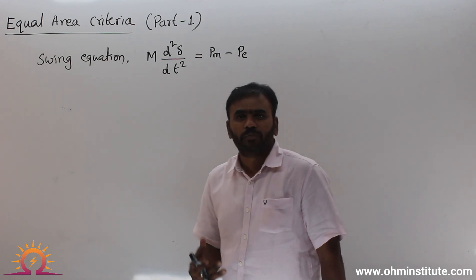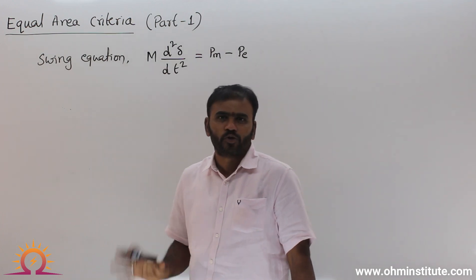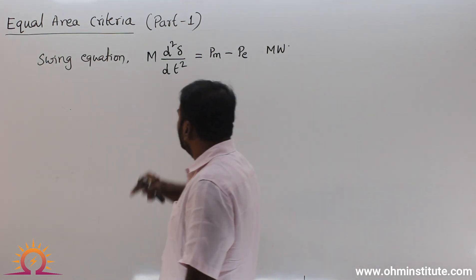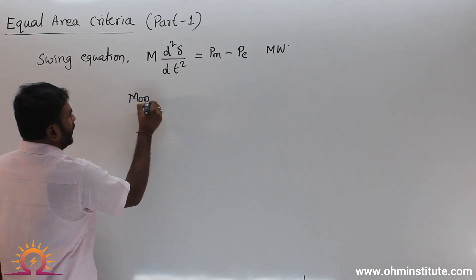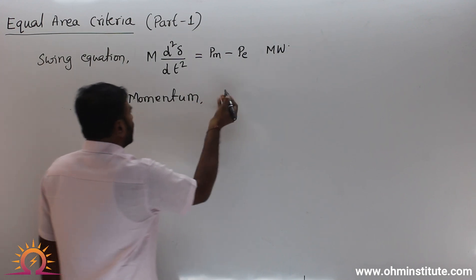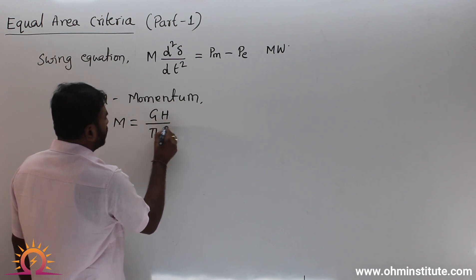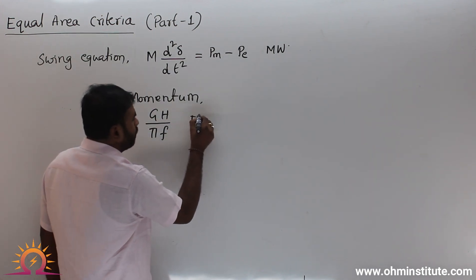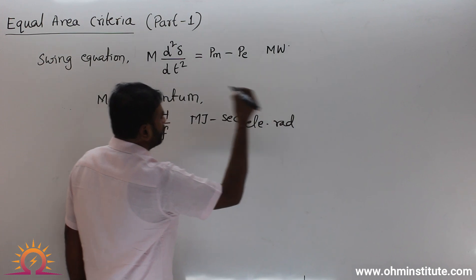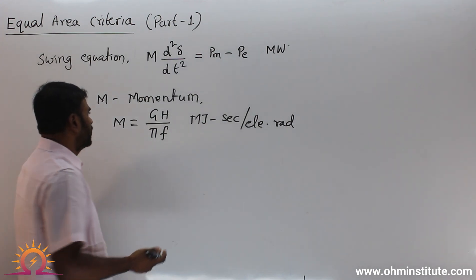You can write the swing equation in per unit or in actual form. In actual form, the units are in megawatts. Here M is the momentum. The formula for momentum is M = GH/πf, and the units are mega joule-seconds per electrical radian, or equivalently megawatt-seconds squared per electrical radian, since mega joules can be written as megawatts times seconds.